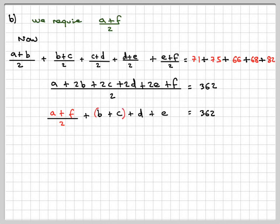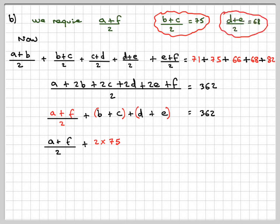If we group those two together, and those two together, then B+C = 2×75, and D+E = 2×68. So (A+F)/2 + 150 + 136 = 362.